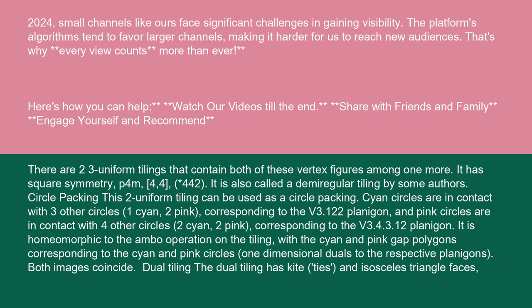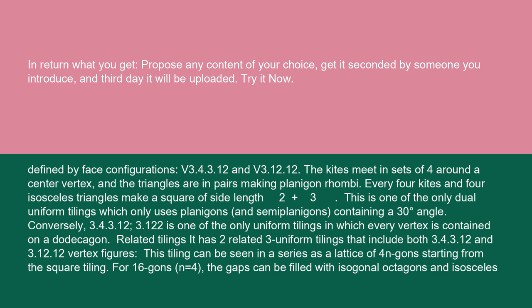One-dimensional duals to the respective planigons — both images coincide. The dual tiling has kite and isosceles triangle faces, defined by face configurations V3.4.3.12 and V3.12.12. The kites meet in sets of four around a center vertex, and the triangles are in pairs, making planigon rhombi. Every four kites and four isosceles triangles make a square of side length 2 plus √3. This is one of the only dual uniform tilings which only uses planigons and semi-planigons, containing a 30-degree angle.